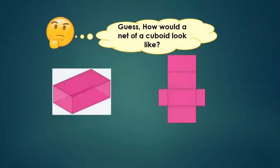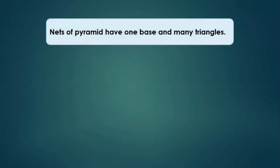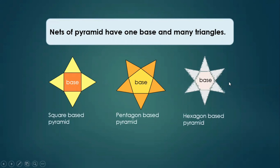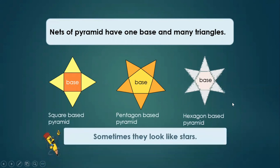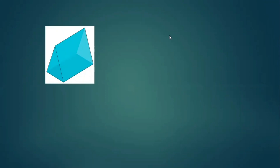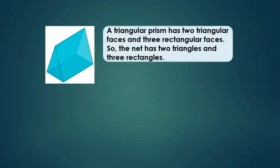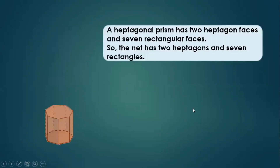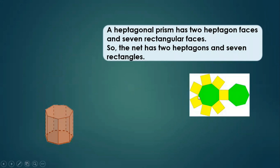Guess how a net of a cuboid would look — it looks like this, six faces. Nets of pyramids have one base and many triangles. A square base pyramid has one square base and four triangles. A pentagon base pyramid has one pentagon and five triangles. A hexagon base pyramid has one hexagon and six triangles. A triangular prism has two triangular faces and three rectangular faces, so its net has two triangles and three rectangles. A heptagonal prism has two heptagonal faces and seven rectangular faces, so the net has two heptagons and seven rectangles.